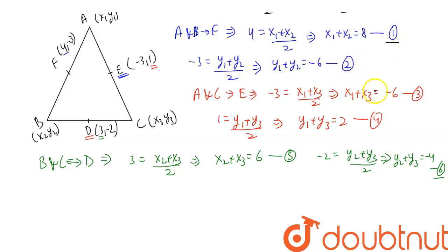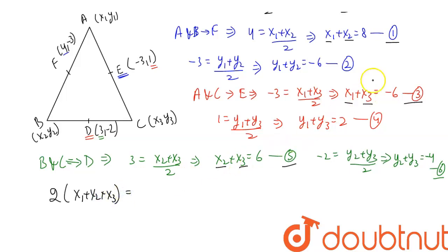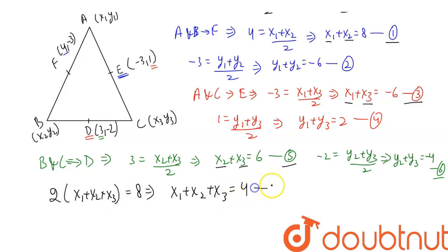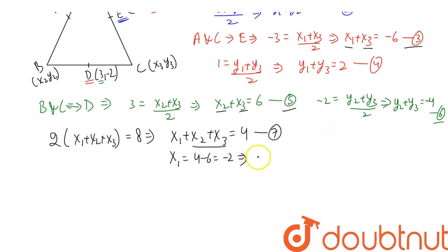Now we add equations 1, 3 and 5. On the left-hand side we get 2x1 + 2x2 + 2x3, so taking 2 common: 2(x1 + x2 + x3) = 8 + (-6) + 6 = 8. So x1 + x2 + x3 = 4. This is equation 7. Using equation 5, x2 + x3 = 6, so x1 = 4 - 6 = -2.